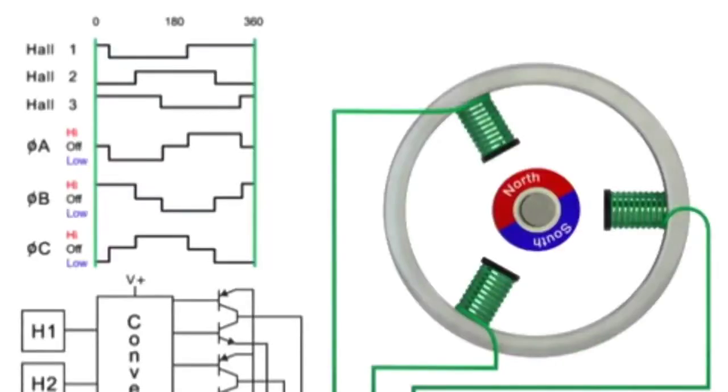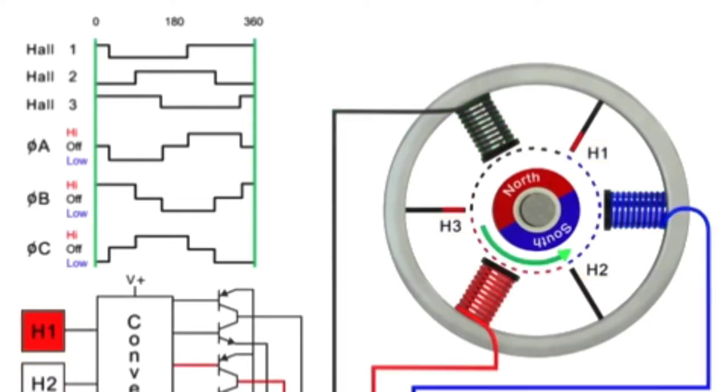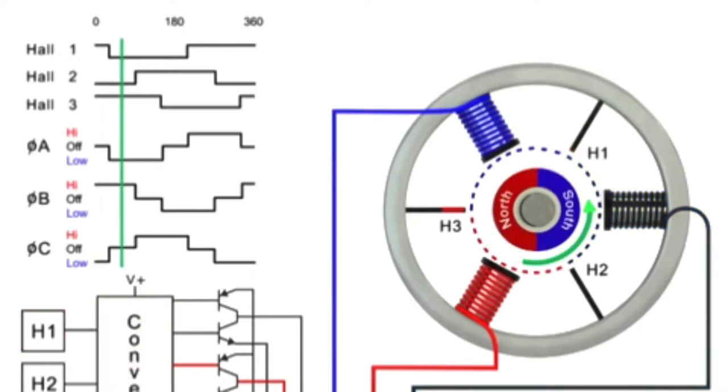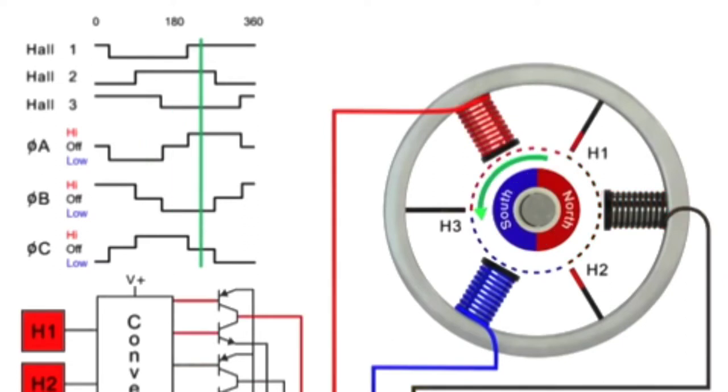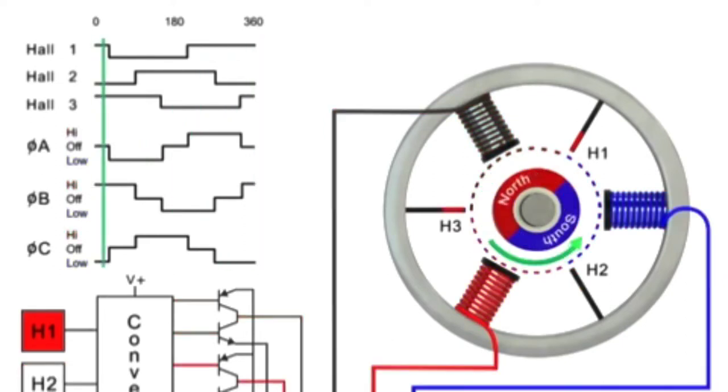The sequence is further explained here when the Hall effect sensors turn on. Coils are energized by the converter. The coils alternate in order, creating the magnetic field to turn the rotor. The sequence is repeated with the next set of Hall effect sensors and coils to continue rotation.